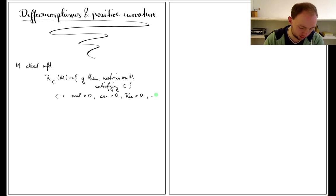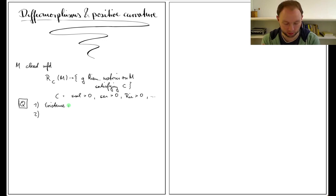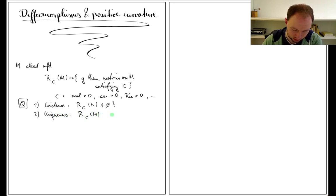When studying these kinds of conditions, there are usually two questions being asked. The first is the existence question: does M admit a Riemannian metric satisfying C, or equivalently, is this space non-empty? The second question is the uniqueness question: is this space actually a point?